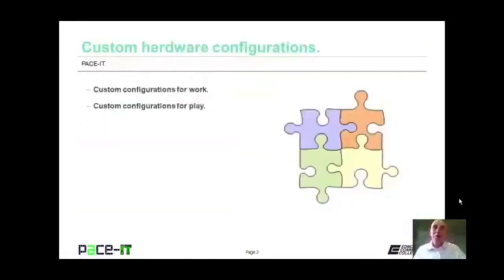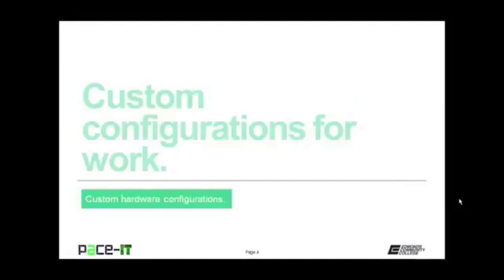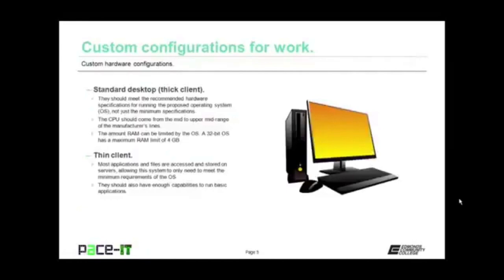Welcome to PACE IT's session on custom hardware configurations. Today we're going to talk about custom configurations for work and custom configurations for play. We begin with the standard desktop — the thick client. It should meet the recommended hardware specifications for running the proposed operating system. Don't just meet the minimum specifications or your users are going to be frustrated. The CPU should come from the mid to upper mid range of the manufacturer's line. For RAM, your limitations are caused by the operating system — a 32-bit OS has a maximum RAM limit of 4 gigabytes, whereas a 64-bit OS doesn't have that limitation.